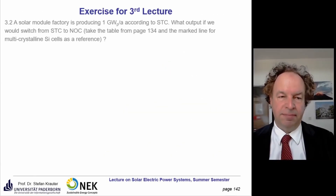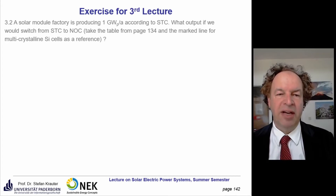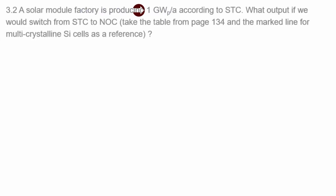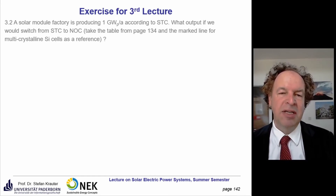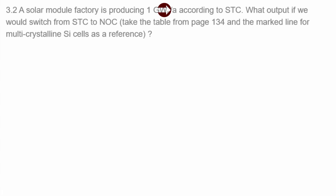We come to the second part, about the solar module factory which produces one gigawatt-peak (GWp). The index P indicates peak — meaning measured at standard test conditions. It is a convention in the industry to use this P to indicate that power has been measured at standard test conditions. The production is one GWp per year. We want to see how the output of that factory would change if you used more realistic conditions — the nominal operating conditions — using multi-crystalline silicon cells as a reference.